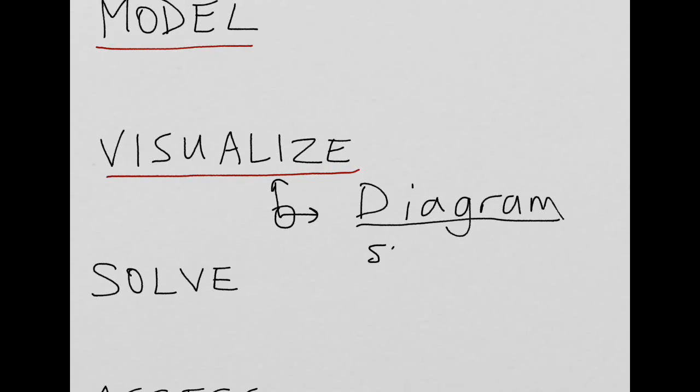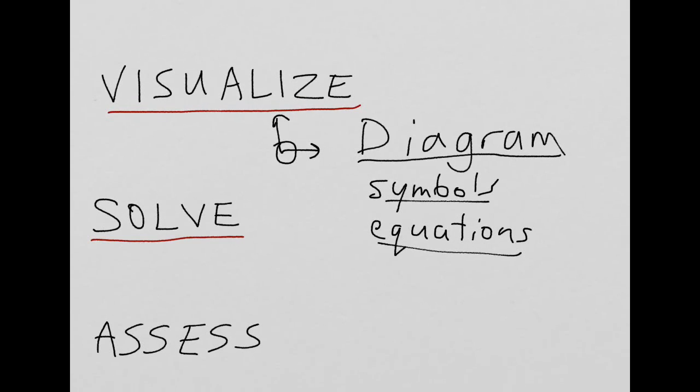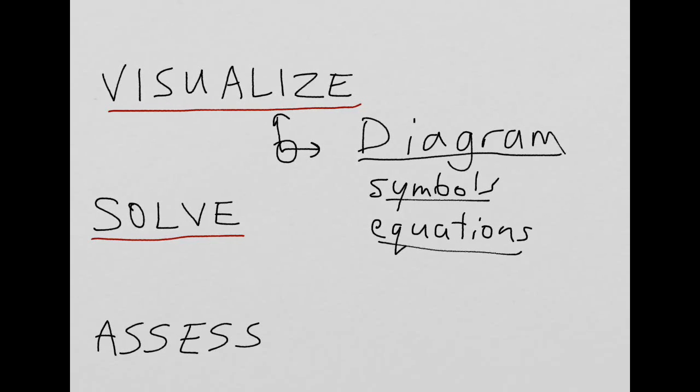Come up with the symbols that you want to represent position, or time, or something. And then also write down the equations that you think are going to be useful to find what it is that you need. And then once you've set that up, the next step will be to solve those equations for what you need to find. Easily easy to say, not always so easy to do, but you'll get better at it. And then lastly, you want to assess the answer that you get, which means to ask the question, does it make sense?